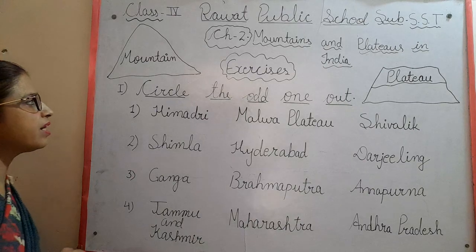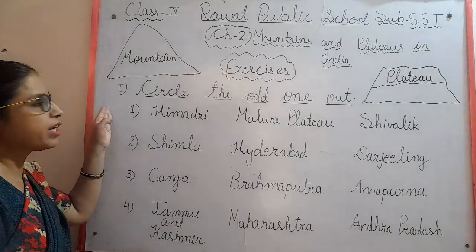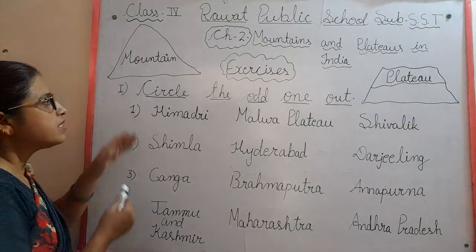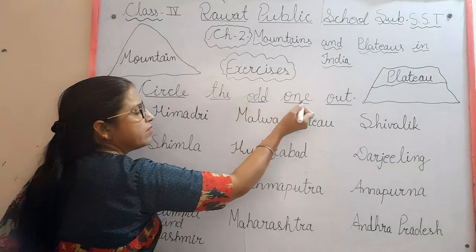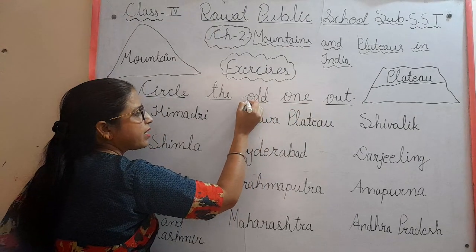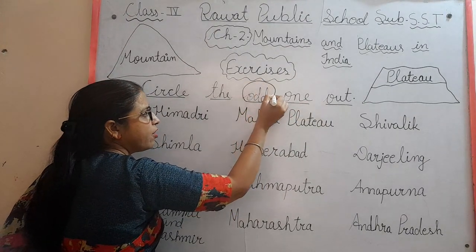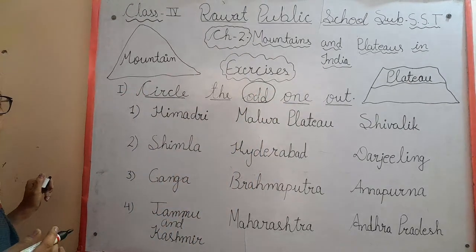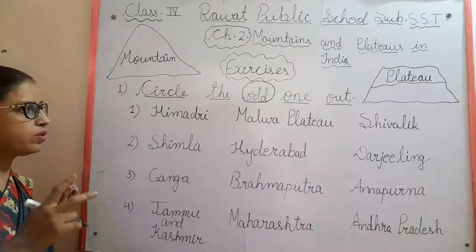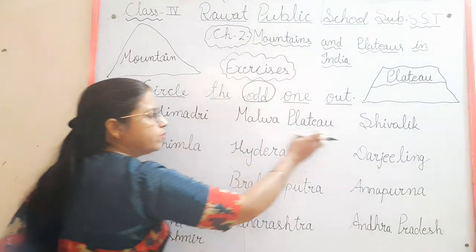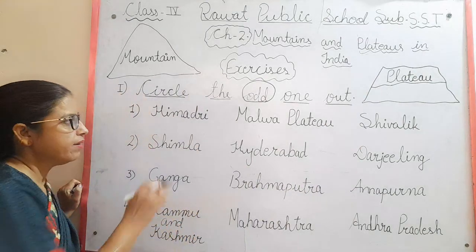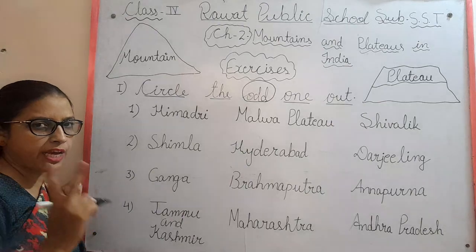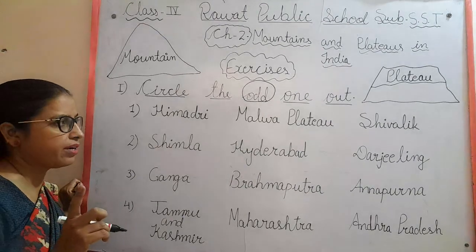Now let me start exercise question number 1. The question is: circle the odd one out. 'Odd' means different. Here there are three words, and two of them are the same category while one is different — that one is the odd one out.